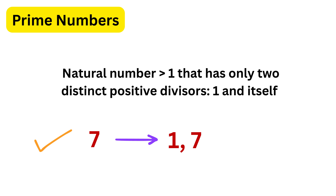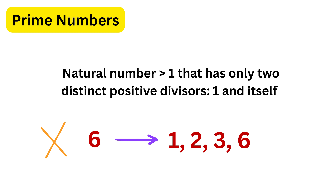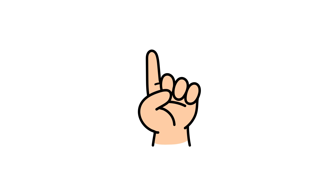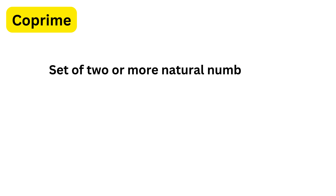Seven is prime because its only divisors are one and seven. A number like six is not a prime number because it can be divided by one, two, three, and six. Now there is one more term you need to know: co-prime.